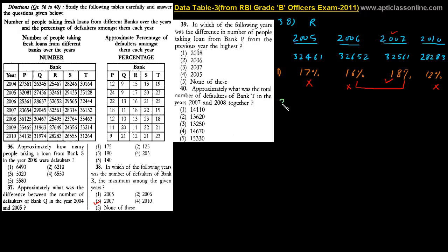Let's move to question number 39: In which of the following years was the difference in the number of people taking loans from Bank P from the previous year the highest? We have to look at this table for Bank P.